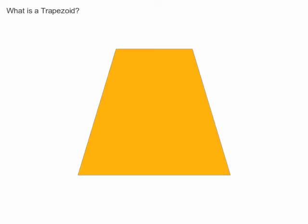The trapezoid is the oddball of the quadrilateral family. It looks like a rectangle and a triangle or two fused together.